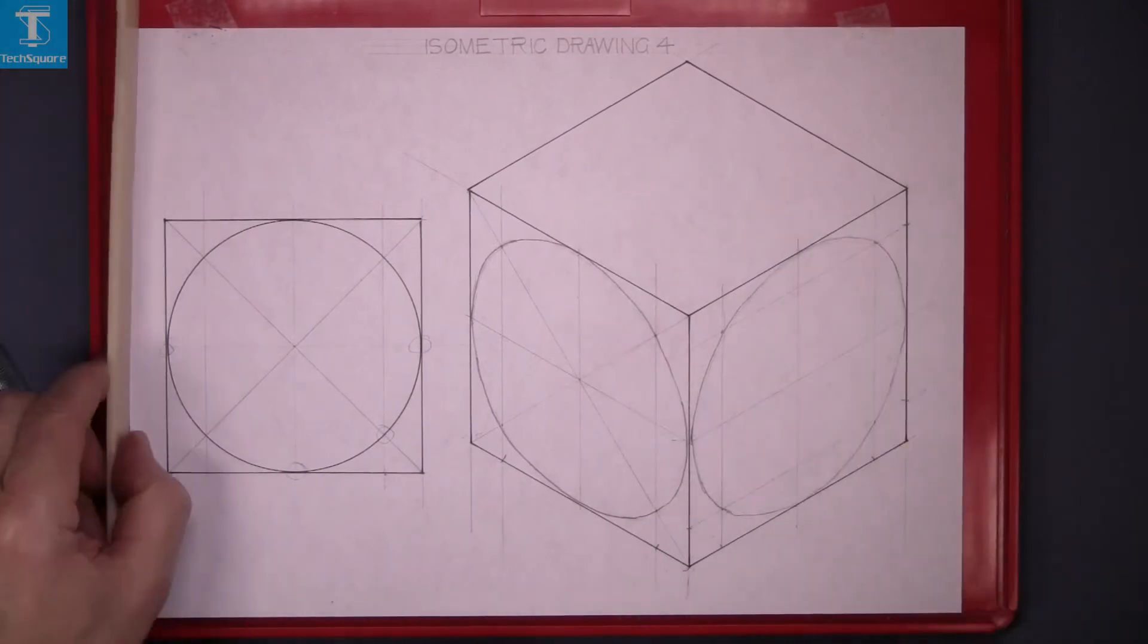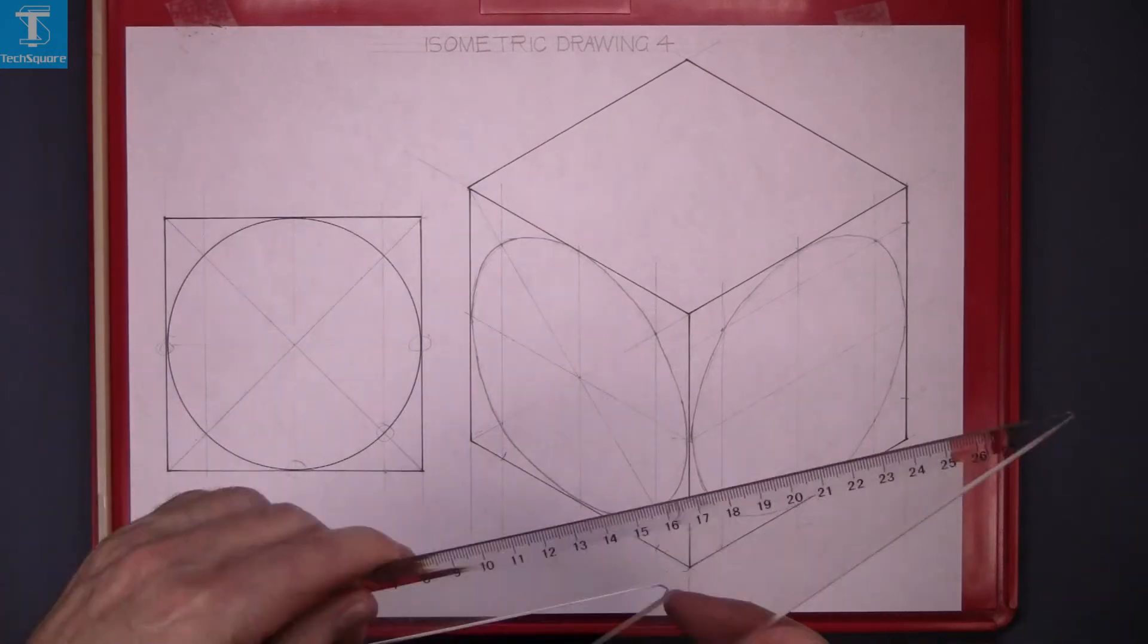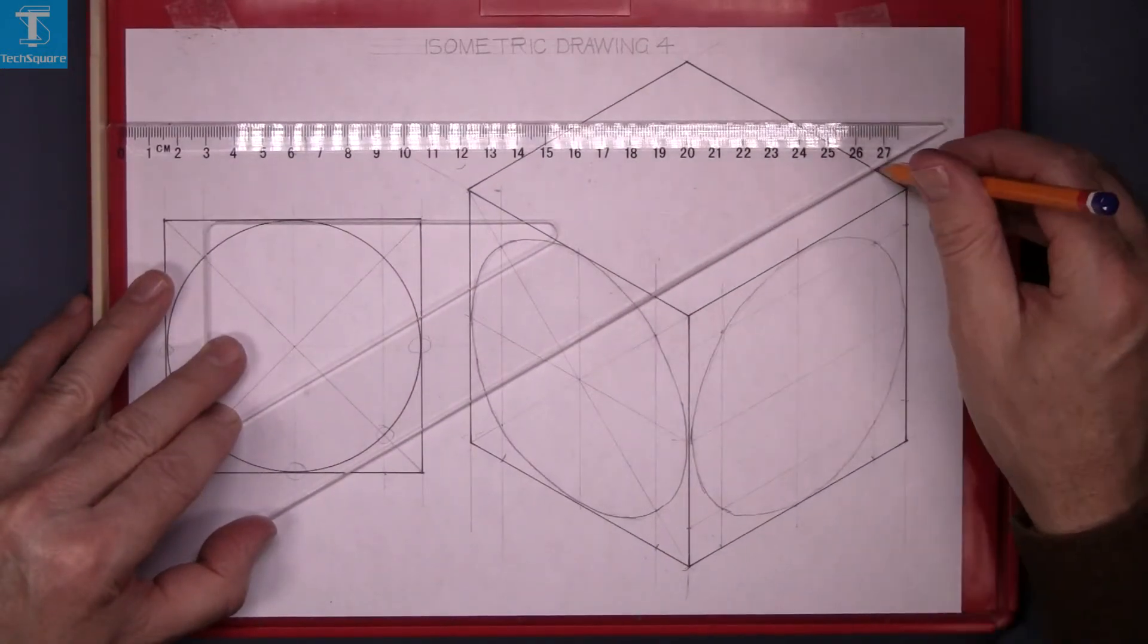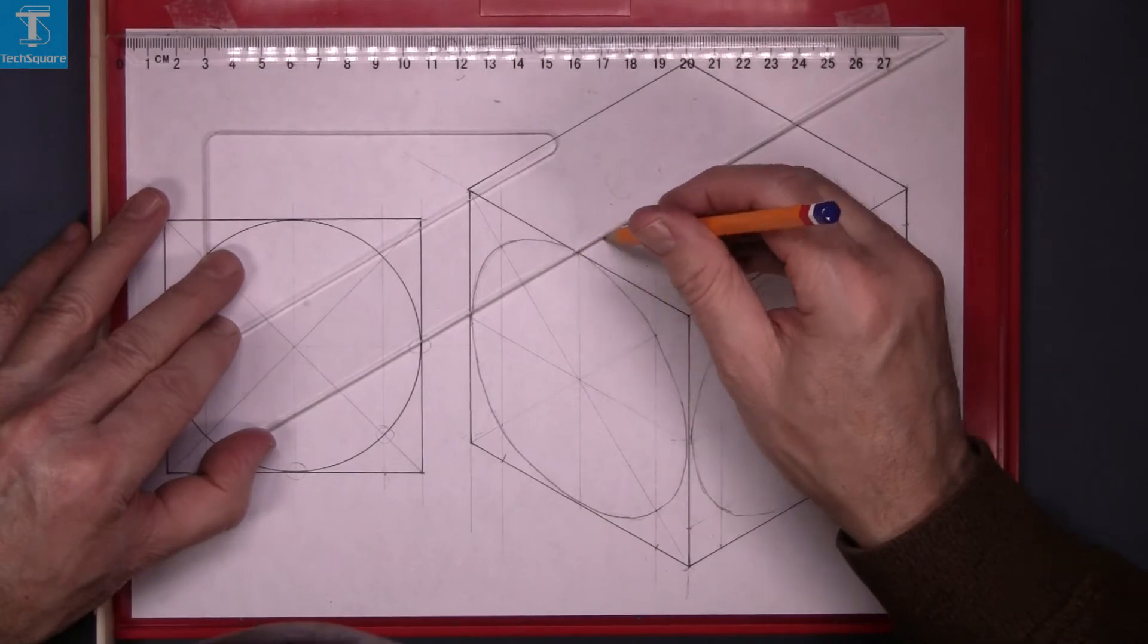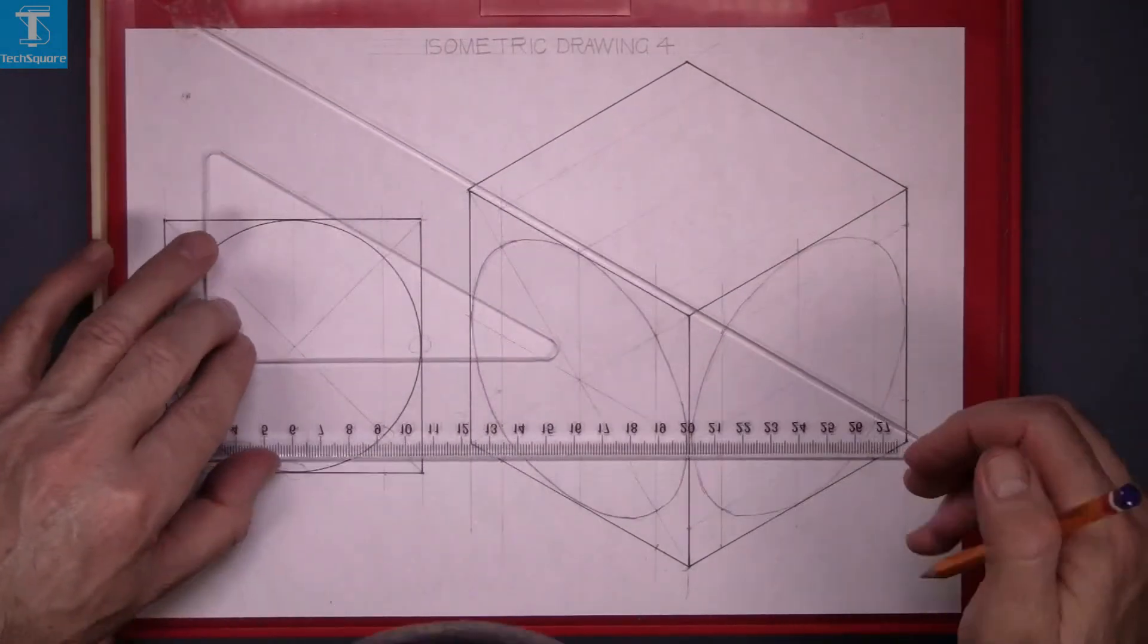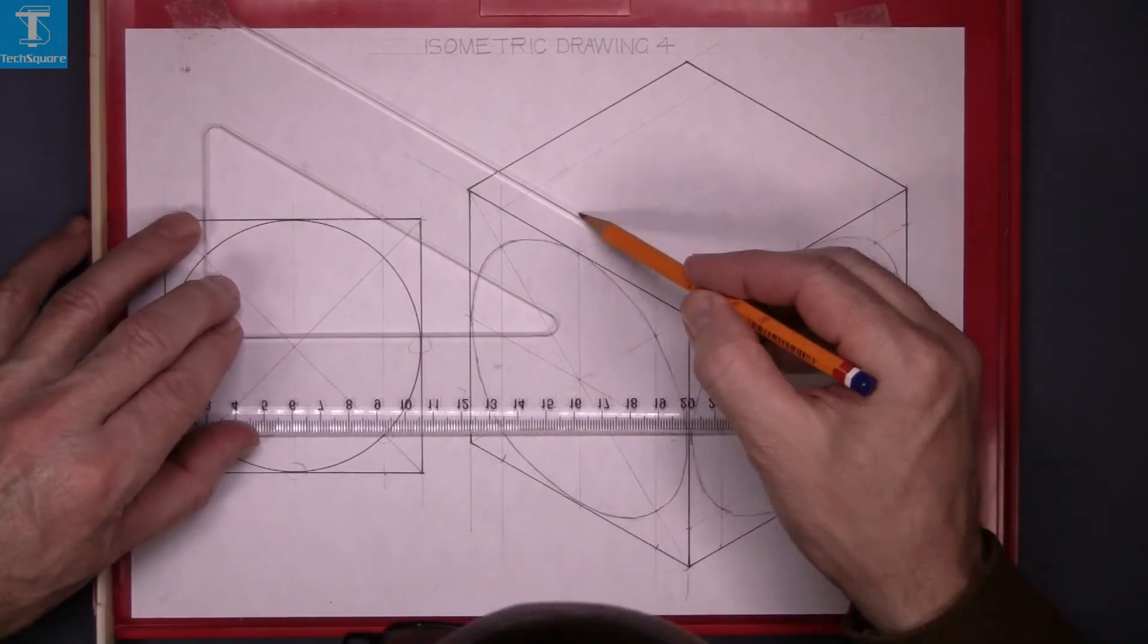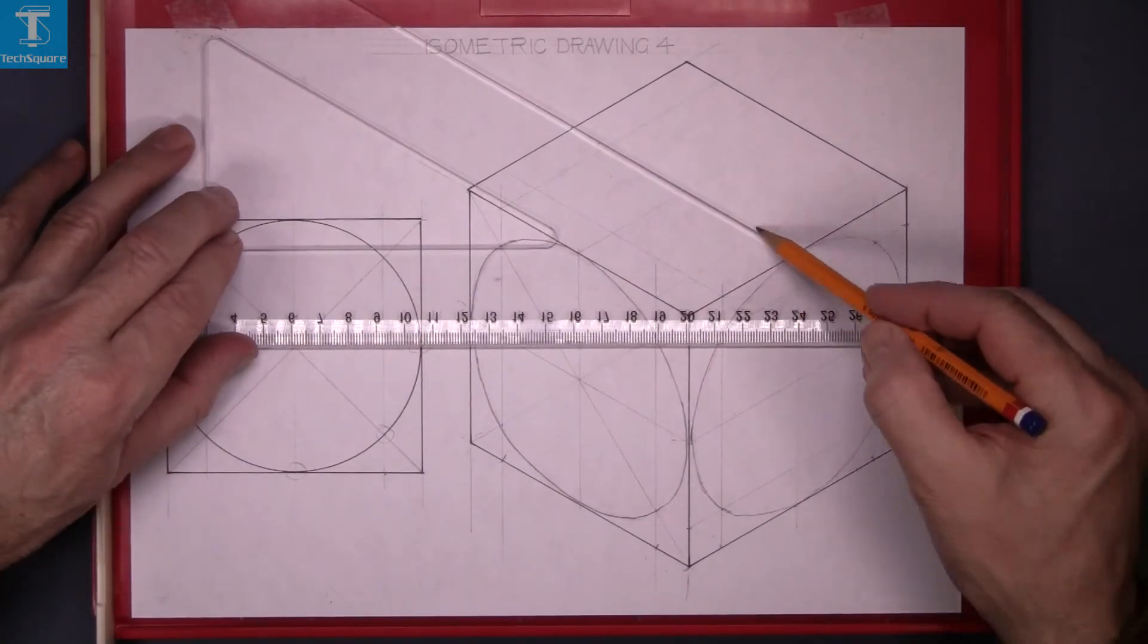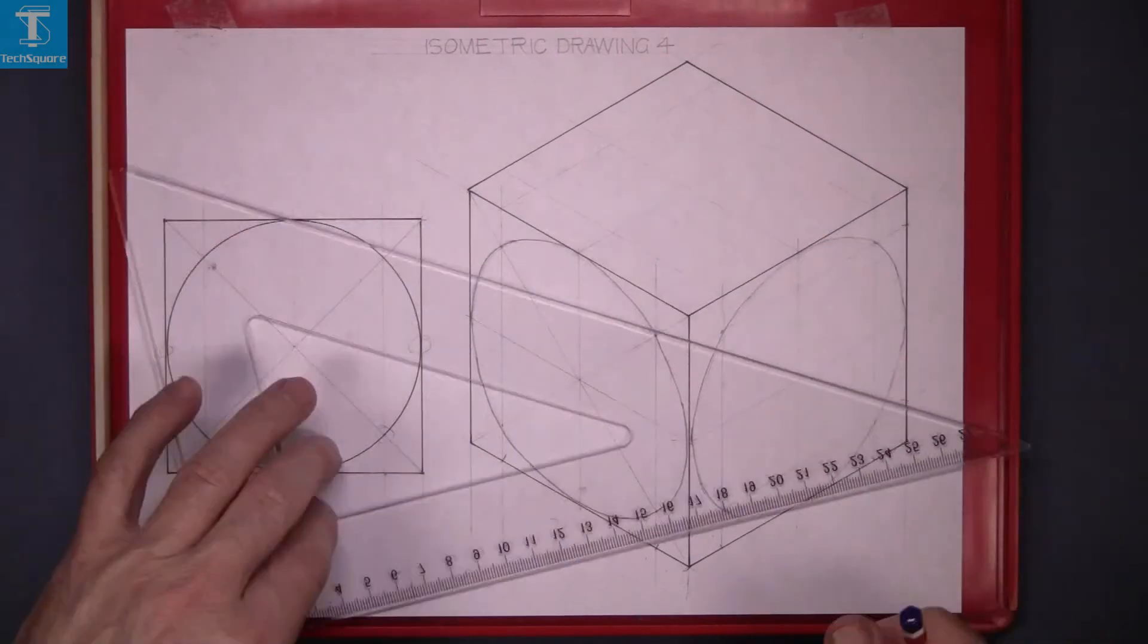Now do the same on the top. So again find the points and that's the eight points again.